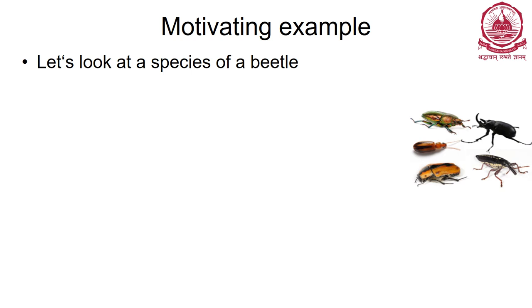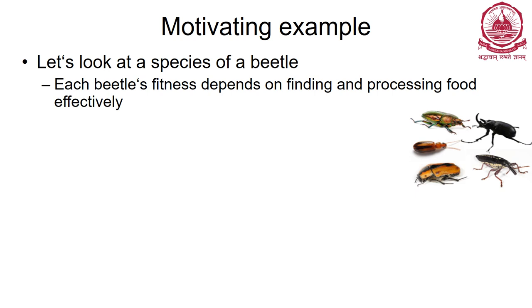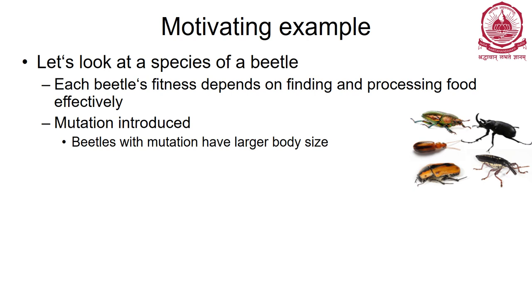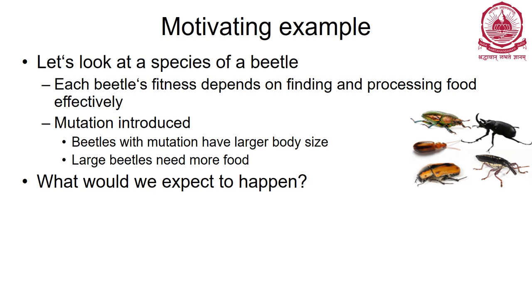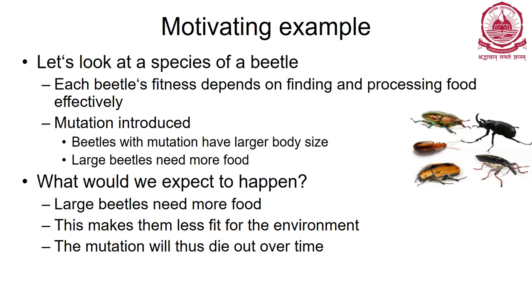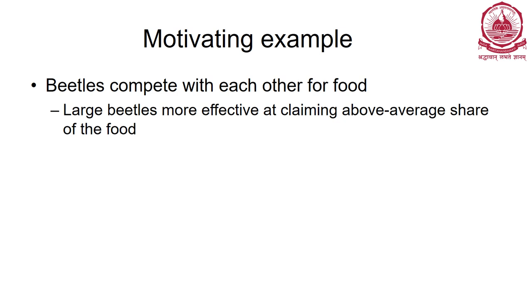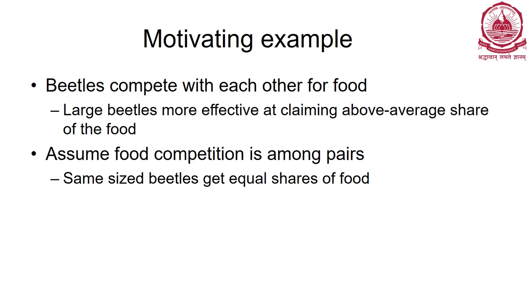A motivating example: consider a species of beetle. Each beetle's fitness depends on finding and processing food effectively. If we introduce a mutation where beetles have a larger body size, they need more food, making them less fit for the environment. However, beetles compete for food and large beetles are more effective at claiming an above-average share. Whenever a large beetle interacts with a small beetle, the large beetle gets more food. Assume food competition is among pairs.